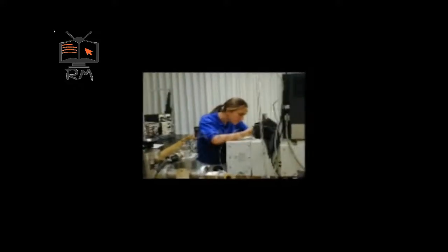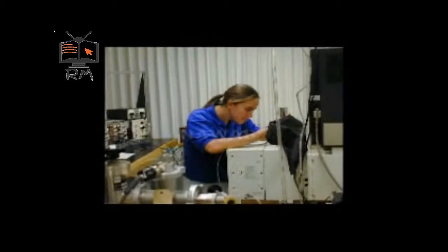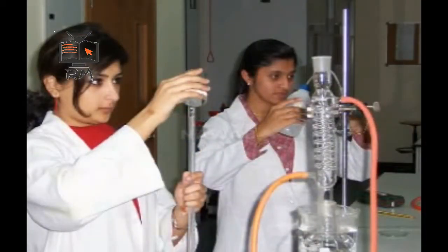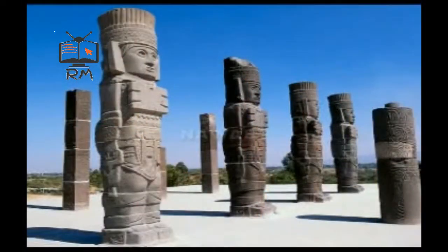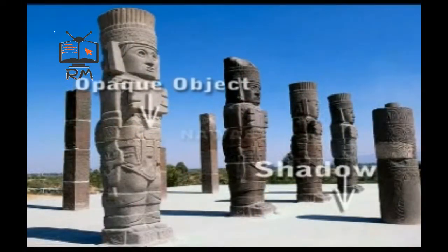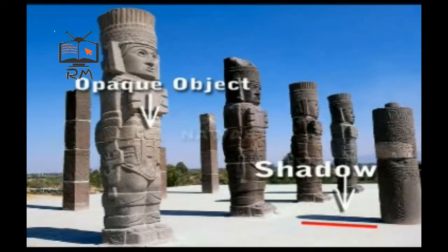On the basis of the data collected through observations or experimentations, we can develop a hypothesis. This is done in order to test its logical results. It is assumed that nature will act in a particular way under certain specific circumstances. From the above example, we assume that shadows of opaque objects are formed when they come in the path of light, because light travels in a straight line.